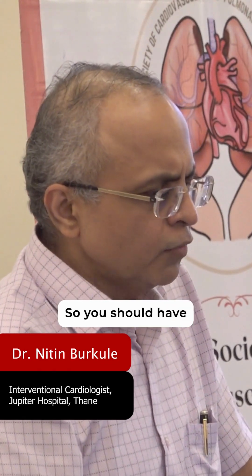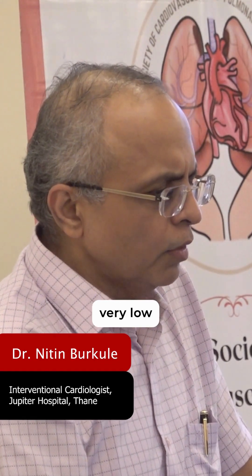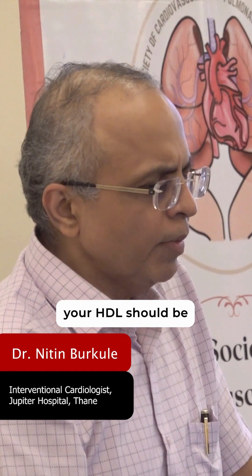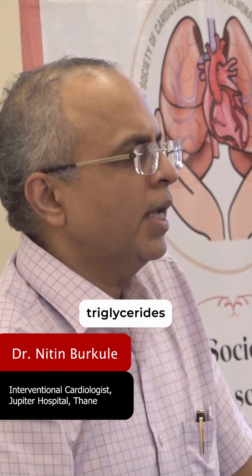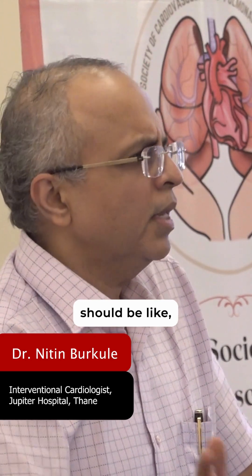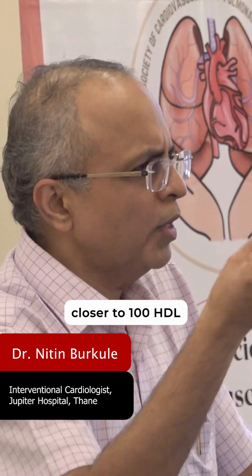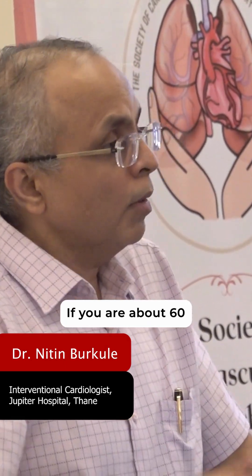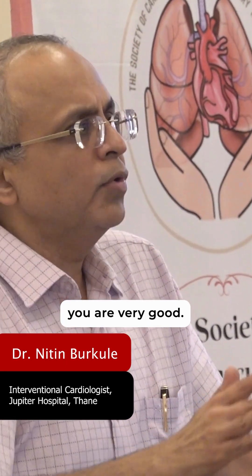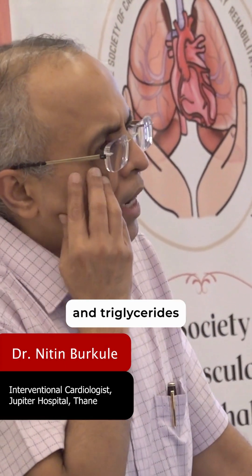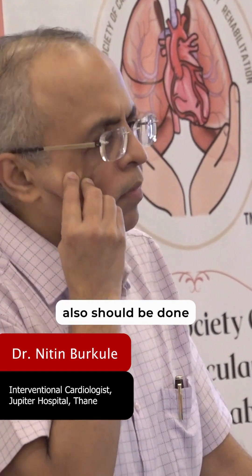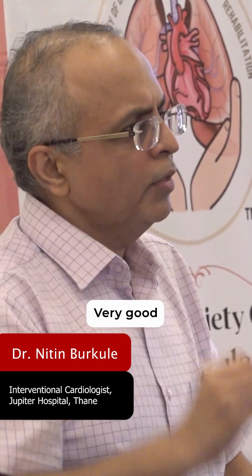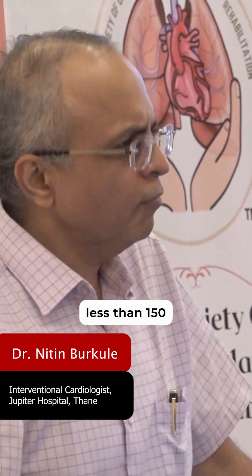From your report, you should know your LDL and HDL values. Your LDL should be low, your HDL should be high, and your triglycerides should be low. Generally, your LDL should be closer to 100, HDL should be above 40 — if you're above 60, you have very good protection. Triglycerides should definitely be less than 200, and ideally less than 150.